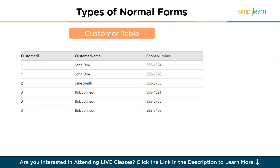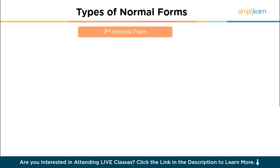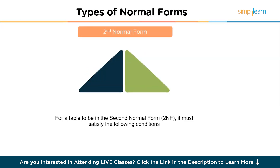Let's go through each of these database normal forms step by step with simple examples. The second normal form (2NF) requires that the table must be in 1NF and have no partial dependency, meaning every non-key attribute should be fully dependent on the entire primary key, not just part of it. This rule applies primarily to tables with a composite primary key.